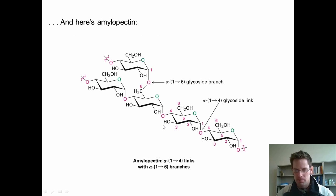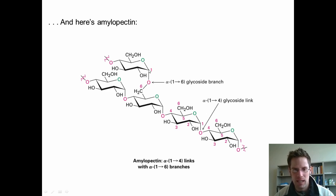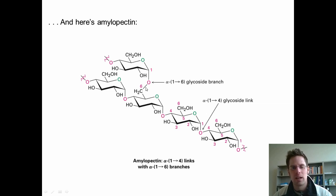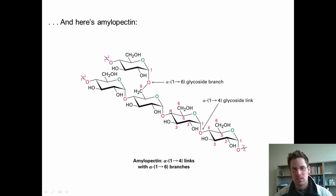Here's the structure of amylopectin. Amylopectin is a glucose molecule that has branch points at position 1,4 and also on this CH2OH, where this oxygen is bonded periodically to other glucose molecules at position 1. So it has a little more branching than amylose. One thing to pay attention to is that amylopectin also has all alpha linkages — every one of these oxygens is trans to the CH2OH. Starch is a mixture of 20% amylose and 80% amylopectin.